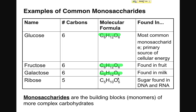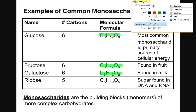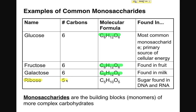Glucose is the most common monosaccharide and is the primary source of cellular energy. In fact, your brain cells can only use glucose as a source of carbohydrate. Fructose is found in fruit. Galactose is found in milk. Ribose is a little bit different — it has only five carbon atoms compared to the six carbon atoms found in glucose, fructose, and galactose, so its molecular formula and structure are correspondingly different.